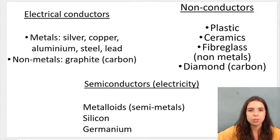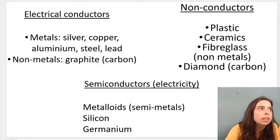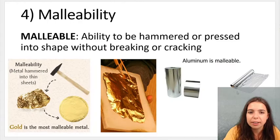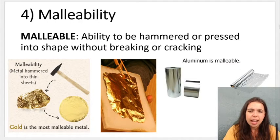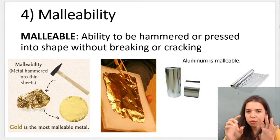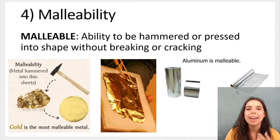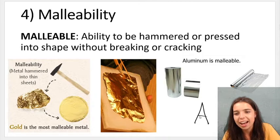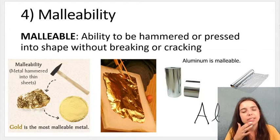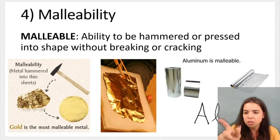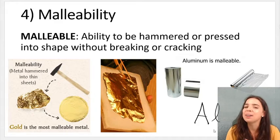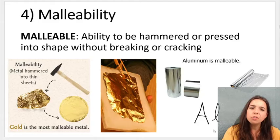Brittleness means something is hard but easy to break. Malleability means a material can be pressed or hammered without bending or cracking. Looking at the screen, aluminium (Al on your periodic table) is a metal that is malleable — it can be pressed or hammered into a thin sheet, which is what we call tinfoil. Gold is also a very malleable metal; we can press it into thin sheets, making gold and silver great for jewelry.